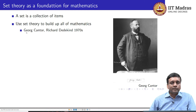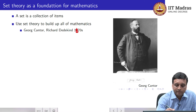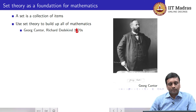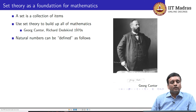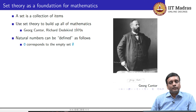Some of the mathematicians involved in this were George Cantor and Richard Dedekind from the 1870s. One aspect of this foundational nature of set theory is, for instance, how do you generate numbers if you have only sets? One of the things that you need if you start with set theory is the empty set — you have it for free.